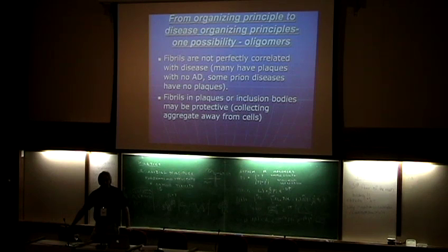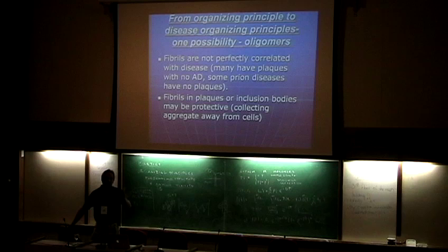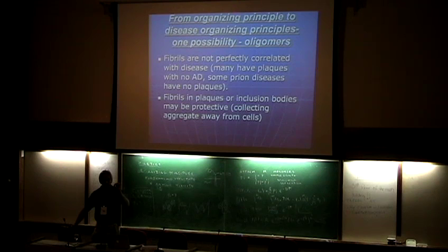Fibrils are not perfectly correlated with the disease. Many people die with plaques from Alzheimer's disease but have never shown symptoms. Some of the mammalian prion diseases, when you look at the brains of the deceased, show the same deterioration of the brain without showing plaques. So what's killing off the nerve cells may not be the plaques with the big fibrils - those are the easiest things to study, but that may not be what's actually killing things.